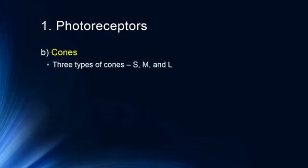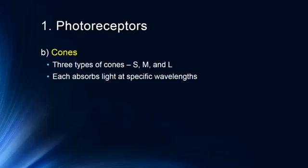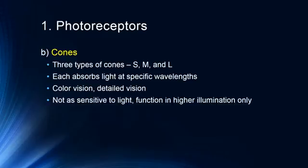The fovea consists entirely of cones, which are responsible for our detailed and color perception. There are three types of cones in most humans: short, medium, and long wavelength cones, sometimes called blue, green, and red cones. Each absorbs light at specific wavelengths and they are associated with color vision and detailed vision — anytime you're reading or taking in fine detail, cones are at work. Cones are not as sensitive to light, so they function only at higher levels of illumination such as daylight.